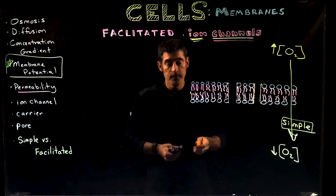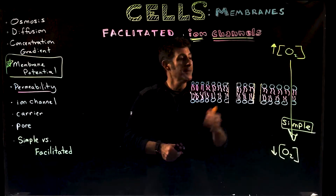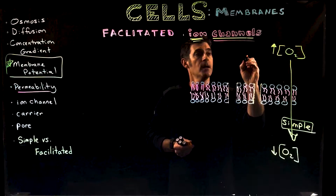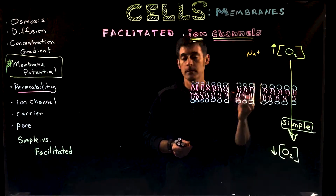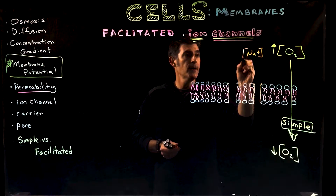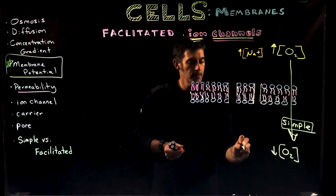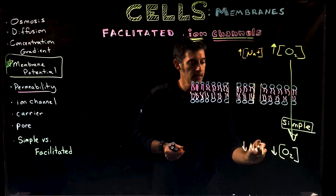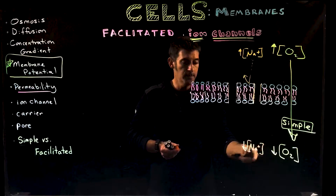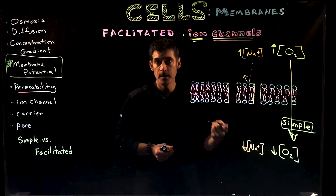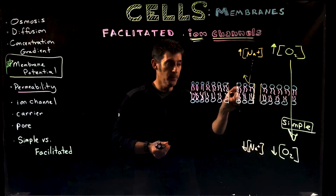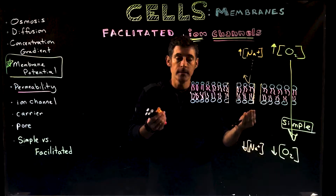There are a lot of other things that need to get across cell membranes, but they can't get between the tails — they can't get through that non-polar region. One of those things is ions. For example, a sodium ion with a plus-one charge: if it's in a high concentration on one side and a low concentration on the other, it wants to move, but it won't be able to cross the phospholipid bilayer. A phospholipid bilayer is a semi-permeable barrier — permeable to some things, but not others.